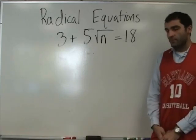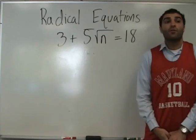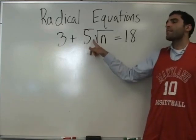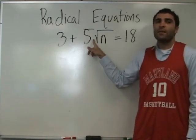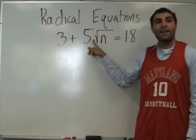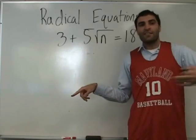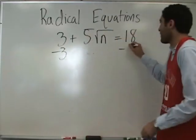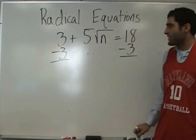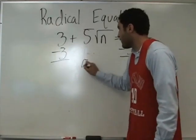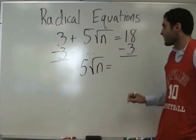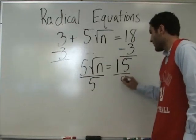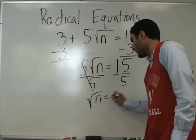Minus 3, minus 3. Why don't we do minus 5? Because that's not a subtraction — we're multiplying here, so we're not going to minus 5. We divide. You asked the question and answered it yourself. Minus 3 on both sides leaves 5 times the square root of n equals 15. Divide by 5. The square root of n equals 3.